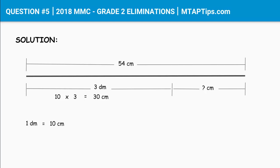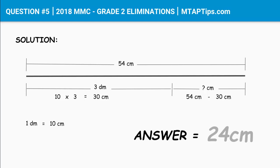Therefore, we can now do 54 centimeters minus 30 centimeters and we'll get 24 centimeters. We need to cut 24 centimeters.